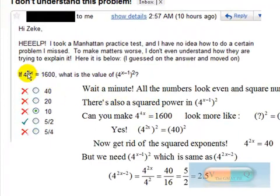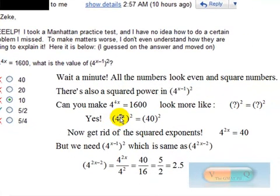And then, so how do we make this 4 to the 4x look more like something squared? Well, that would just be 4 to the 2x squared.